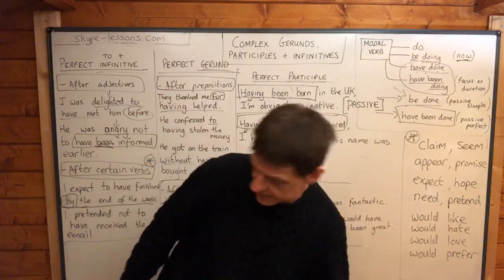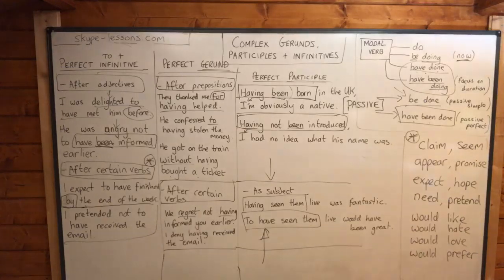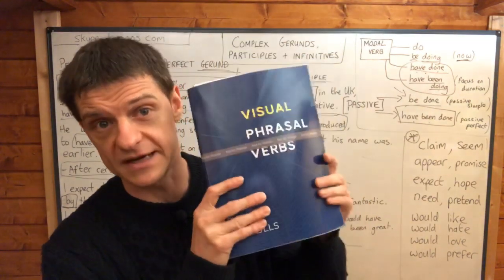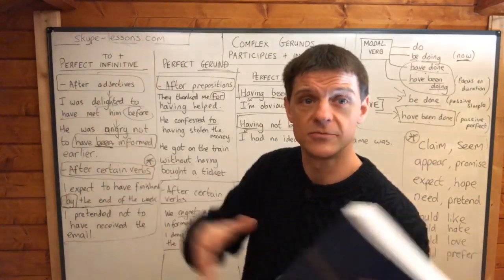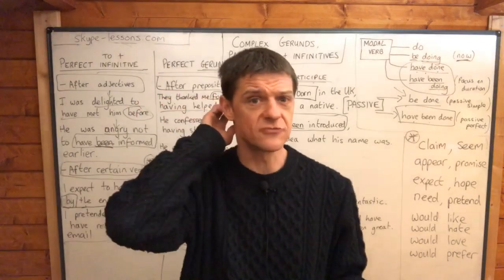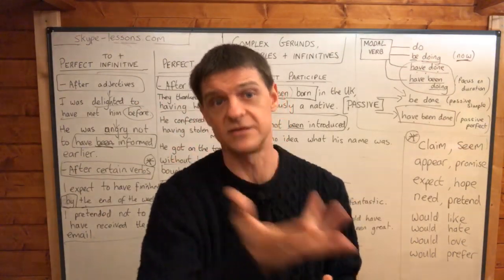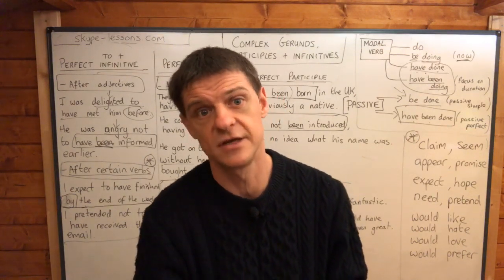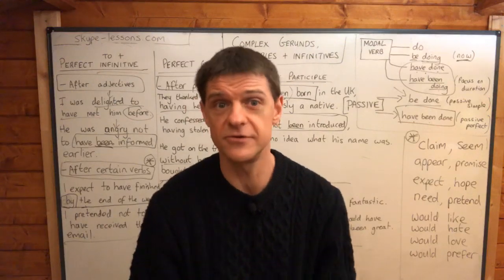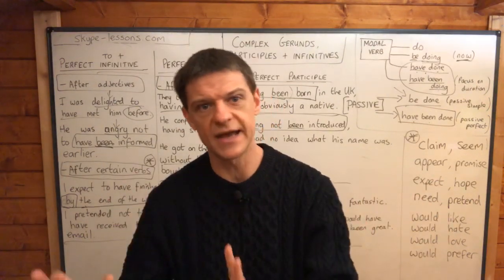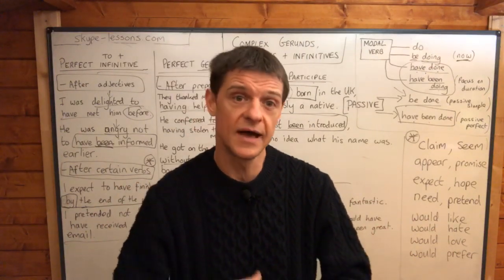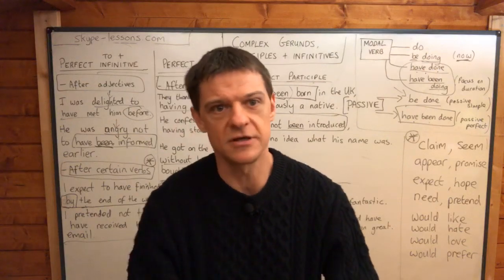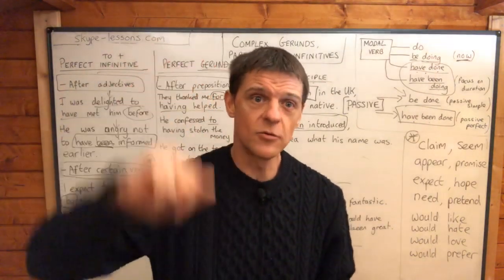Thanks everybody for watching. If anybody would like to buy a book, I've got one — Visual Phrasal Verbs — about phrasal verbs, available for £20 on Amazon or as a PDF colour from the website. I'm also writing a grammar book aimed at natives, particularly for anyone teaching or studying GCSE English or A-level English — it will cover nouns, verbs, adjectives, adverbs, punctuation marks, parallel structure, and different techniques to improve your sentences. Thanks everybody for watching — I hope to see you all soon.